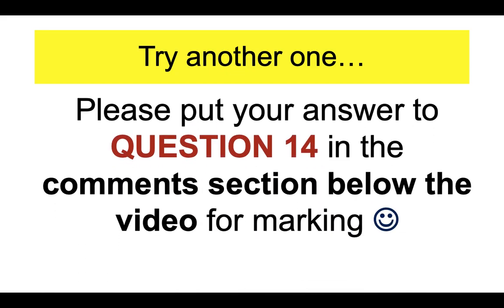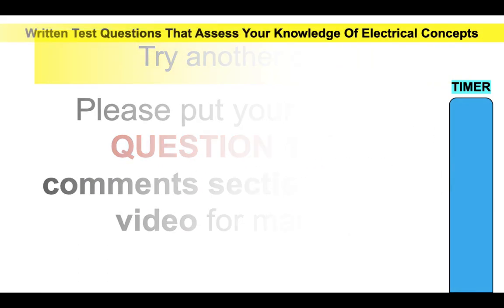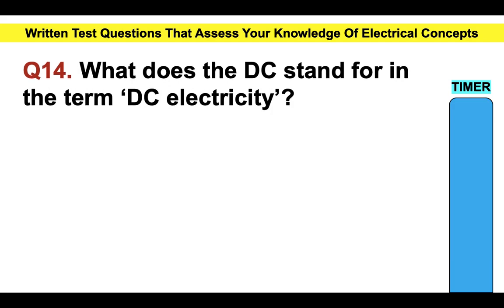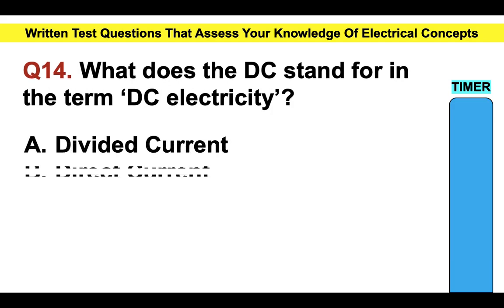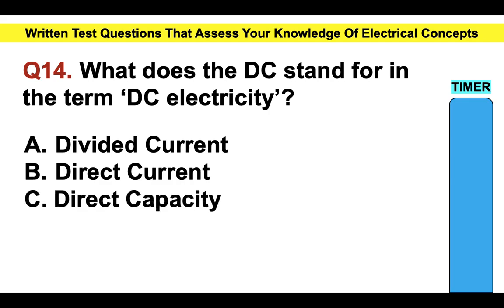Please put your answer to question fourteen in the comments section below the video for marking. What does DC stand for in the term DC electricity? Is it A, divided current; B, direct current; C, direct capacity; or D, diode current?